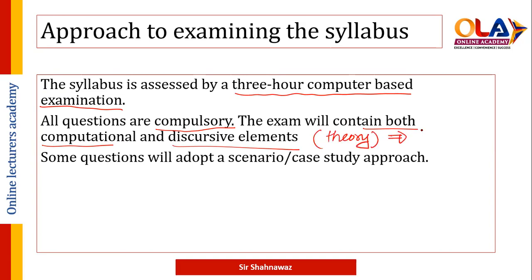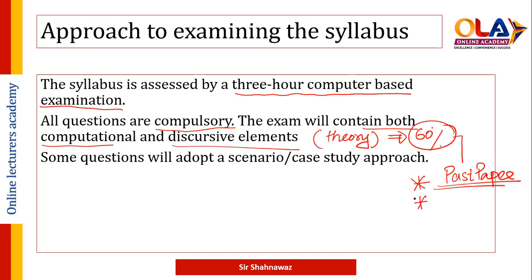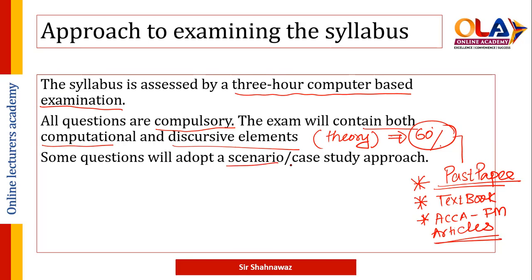आप exam में कम से कम 60% theory expect कर सकते हैं। इस paper को pass करने के लिए theoretical context बहुत अच्छी होनी चाहिए। इसके लिए past papers को refer करना चाहिए — past papers की theory replicate भी होती है। इसके लिए एक अच्छी textbook इस्तेमाल करें और ACCA FM के technical articles जो ACCA की website पर हैं वो लाज़मी read करके आएं।